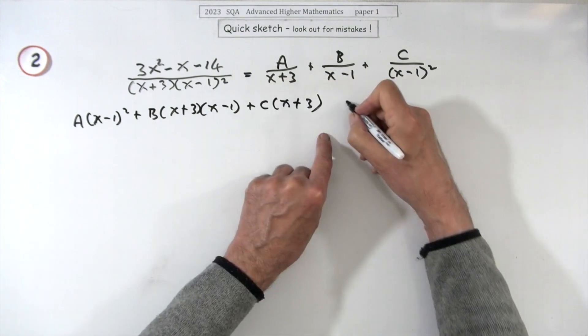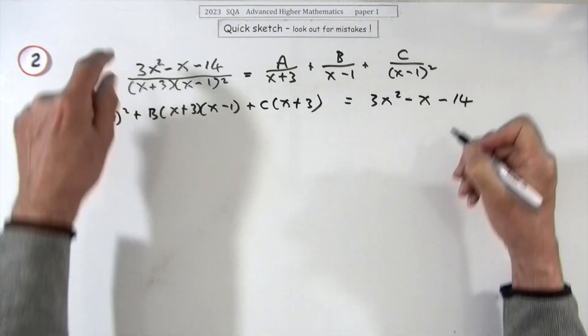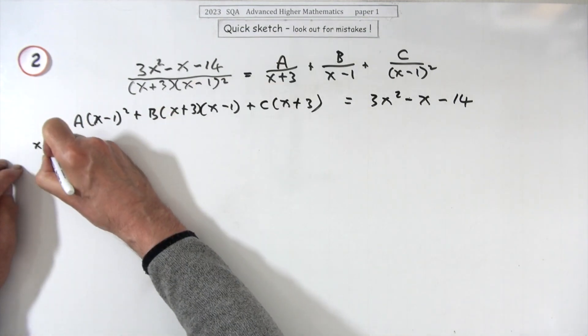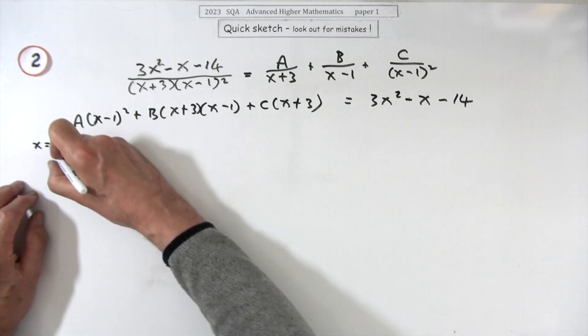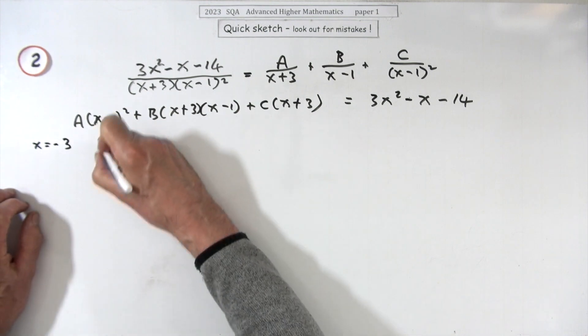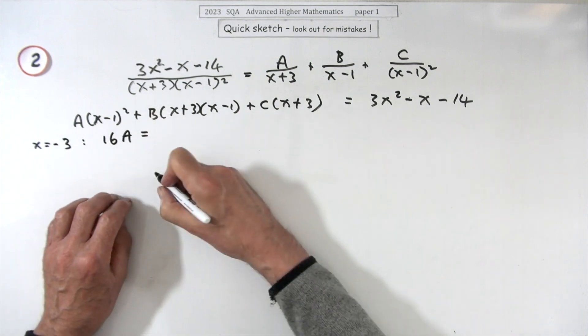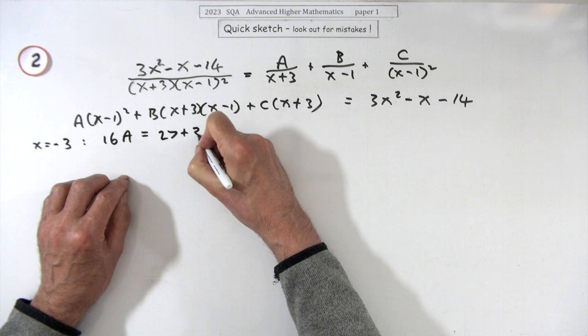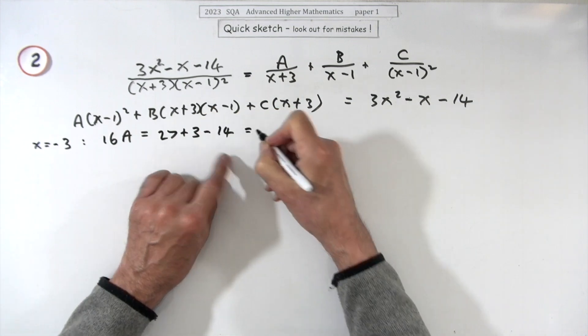And that lot should equal this numerator: 3x² - x - 14. Right, we'll just knock out, just use the knockouts. I'd rather get A first, so I'll knock these out. So if you make x equal to negative 3, negative 3 would make that a 16 when you square it, 16 lots of A. Then we'll just have to feed it into this side over here, so that'll be 27 and 3 and minus 14.